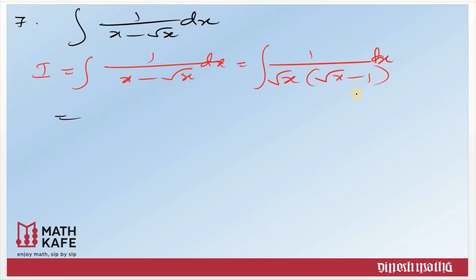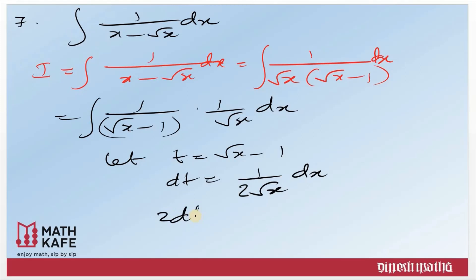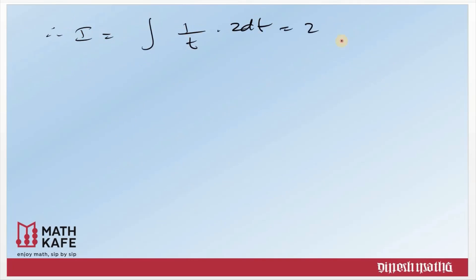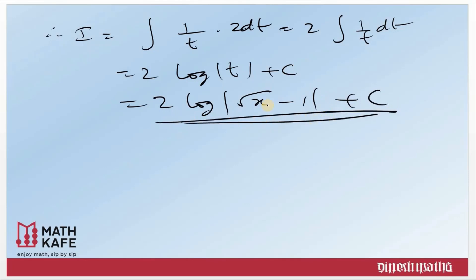If you take (√x − 1) as a substitution, its derivative is 1/(2√x). Let t = √x − 1, so dt = 1/(2√x) dx. We already have 1/√x dx in the question, so a 2 is extra — take 2 to the left side: 2dt = (1/√x) dx. Now we go back to the original question: I = ∫1/t · 2 dt = 2∫1/t dt = 2·log|t| + c = 2·log|√x − 1| + c.